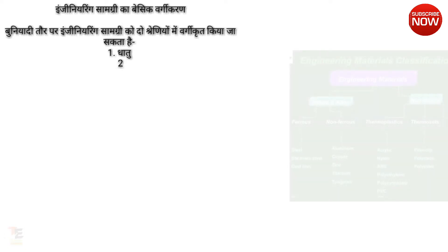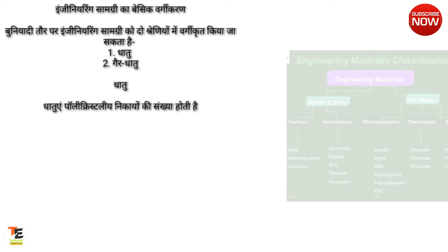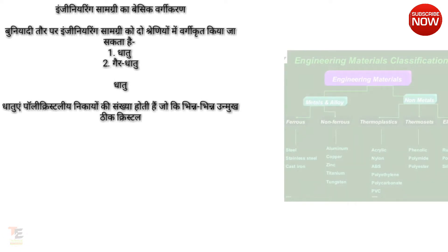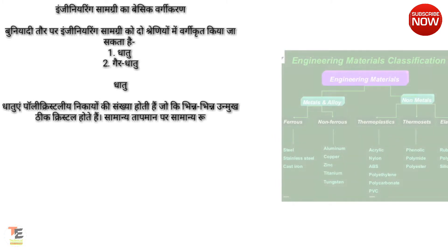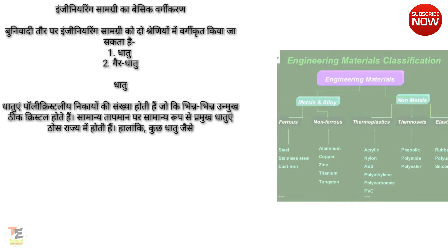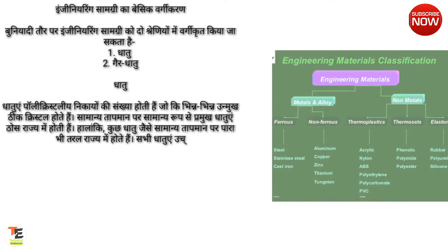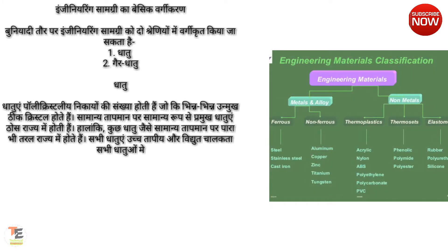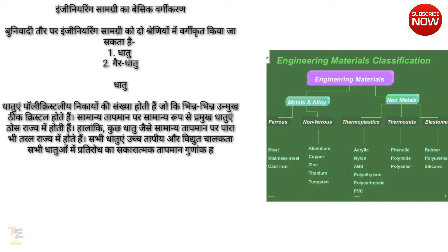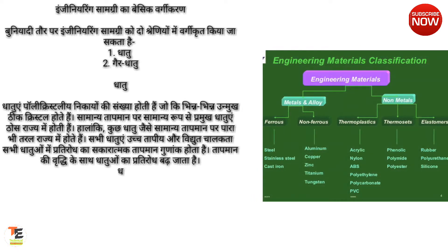Engineering samagri ka basic vargikaran — bunyadhi toor par engineering samagri ko do shreniyon mein vargikrit kiya ja sakta hai: ek dhatu. Dhatu polycrystalline nikaye hain jo vibhinn oriented fine crystals ki sankhya rakhte hain. Aam taur par dhatu saamaanya taapman par thos avastha mein hote hain. Pratirodhkata ka matlab hai taapman ki vriddhi ke saath badhna.